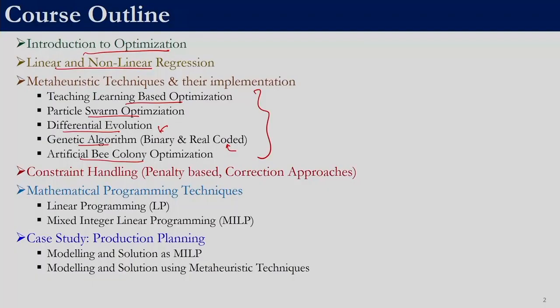We will also be looking at constraint handling. Initially when we discuss these meta-heuristic techniques, we will be looking at only unconstrained and bounded problems. We will assume that there are no constraints and then discuss these techniques. Then we will discuss how to handle constraints in meta-heuristic techniques if the problem has constraints.